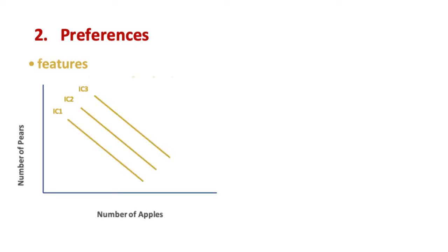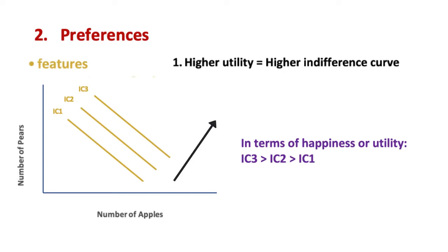Indifference curves have certain features that are worth mentioning. Here are three indifference curves. Indifference curve 3 represents a level of utility that is higher than indifference curve 2, which represents a level of utility higher than indifference curve 1. Therefore, the higher utility is represented by indifference curves further away from the origin of the graph, and vice versa.